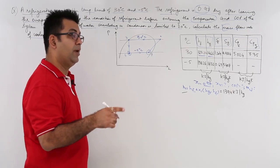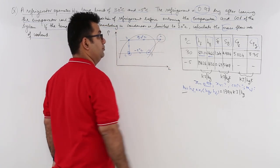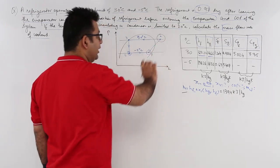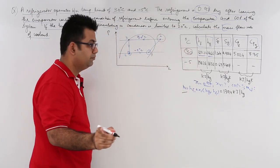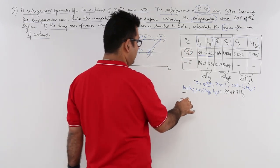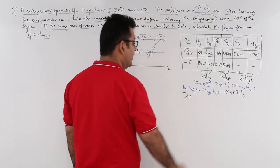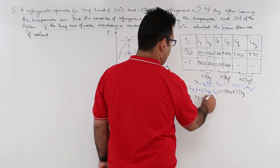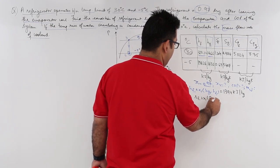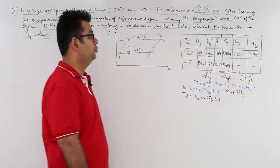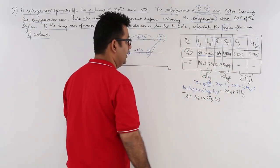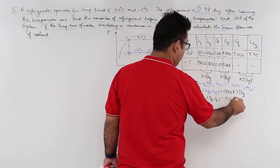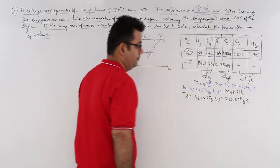We will also find out S1, because we need to find the temperature and enthalpy at point 2. S1 = SF1 + x1 · (SG1 − SF1). Putting in the values, S1 = 5.264 kJ/kg·K.